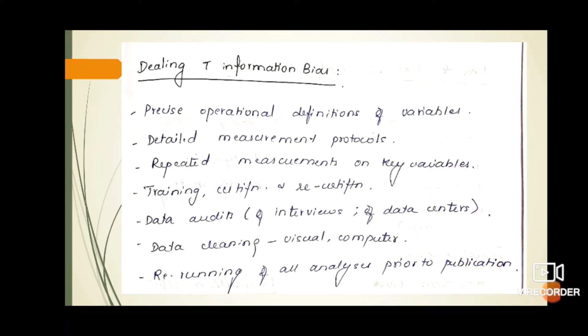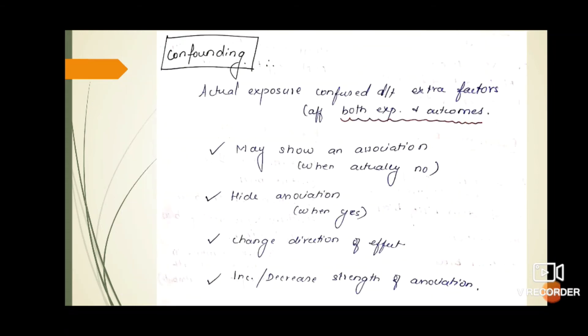How to deal with information bias? Use precise operational definitions of variables and detailed measurement protocols. Take repeated measurements, provide training and certification of data collection methods. Conduct data audits of interviews and data centers, perform data cleaning visually or computer-based, and re-run all analysis prior to publication.